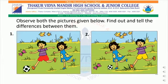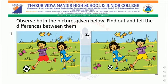In the first picture, the boy is in front of the girl and the girl is behind the boy. Whereas, in the second picture, the girl is in front of the boy and the boy is behind the girl. And students, did you observe the colorful clothes of the children? In the first picture, the boy has worn red pants. And in the second picture, the boy has worn yellow pants.